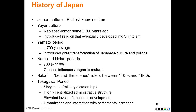The Bakufu, or behind-the-scenes rulers, were well-known and well-documented between the 1100s and 1800s. The Tokugawa period was known for the shogunate or military dictatorship, a highly centralized administrative structure, elevated levels of economic development, and increased urbanization and interaction between settlements. After the Tokugawa family came into power in 1603, Japan experienced elevated economic growth based on increased rice production, the rise of merchants' associations and banking facilities, and commodity trade. A host of urban places with many different functions emerged, including Japan's first large-scale urban region that set the stage for the country's future urban industrial core.